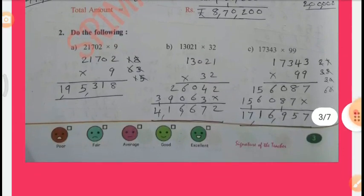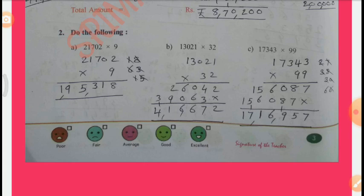Do the following. A. 21,702 x 9. By multiplication: 9 x 2 = 18, carry 1; 9 x 0 = 0 plus 1 = 1; 9 x 7 = 63, carry 6; 9 x 1 = 9 plus 6 = 15, carry 1; 9 x 2 = 18 plus 1 = 19. We get 1,95,318. B. 13,021 x 32 = 4,16,672. C. 17,345 x 99 = 17,16,957.